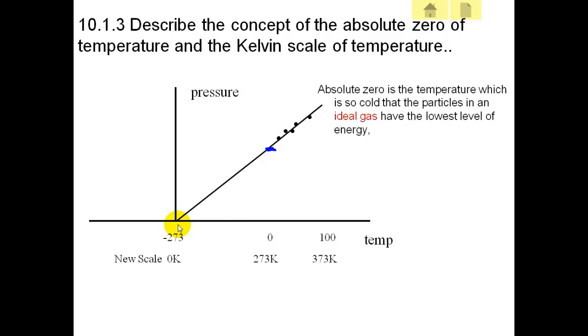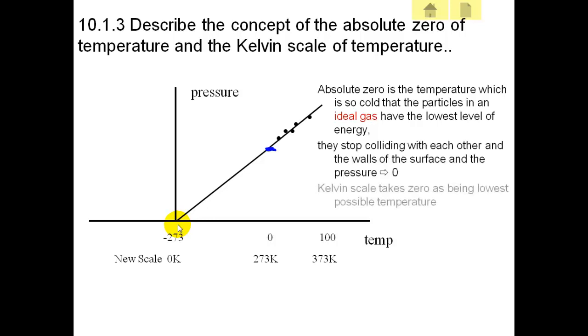Absolute zero is a temperature which is so cold that the particles in an ideal gas have the lowest possible energy level. It means they have stopped moving effectively. The pressure goes down to zero. And this is the coldest possible temperature we can achieve.